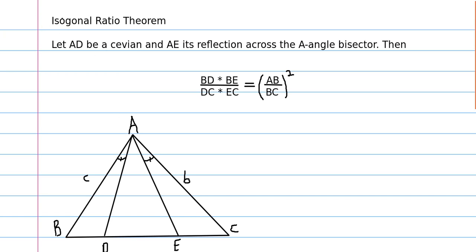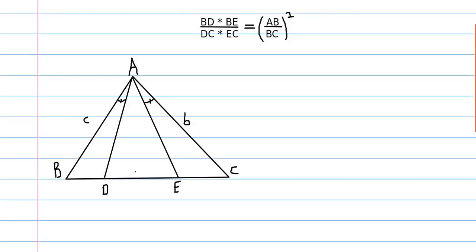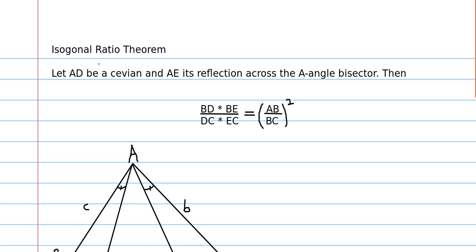All this word isogonal means is relating to the in-center or the angle bisector. So the isogonal conjugate of something is just the reflection over either an angle bisector or the in-center.